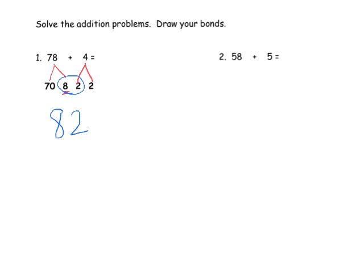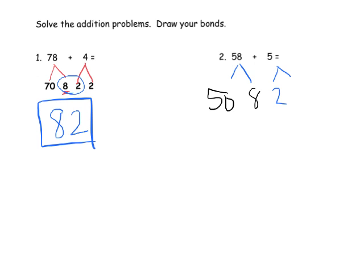Most second graders will be able to jump straight to 82. Here's another one: we've got 58 plus 5. We decompose 58 to 50 and 8. Because we want to make a 10 and we already have 8, we decompose that 5 to 2 and 3. There's our 10, which makes 60, and altogether we have 63.